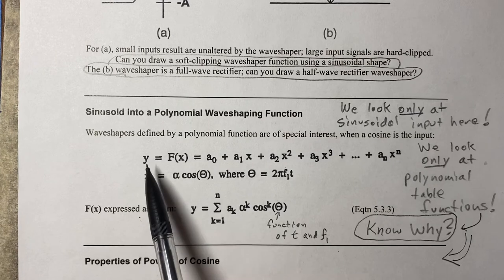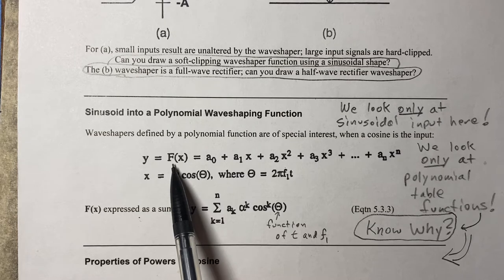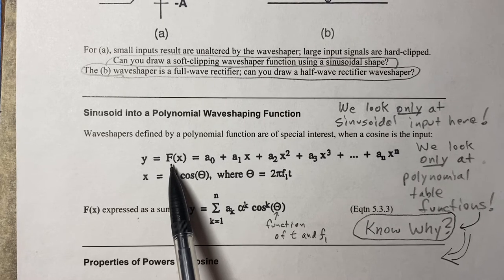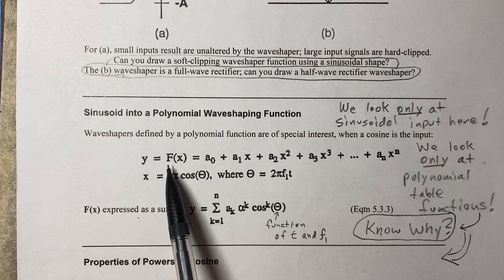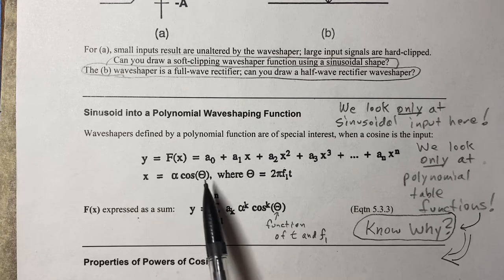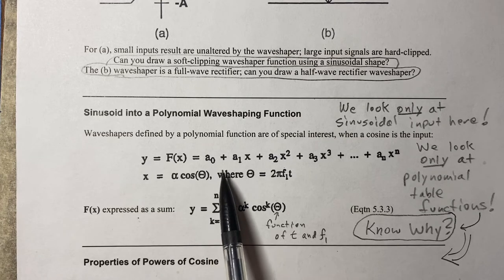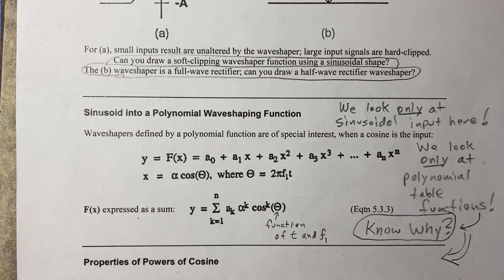Let's talk about the polynomial wave shaping function — we'll call it capital F of X, from the EC302 notes by Professor Beauchamp. You are only responsible for what I talk about here in class, not the entire chapter. If F of X is a polynomial, it's A-naught plus A₁X plus A₂X² all the way up to AₙXⁿ. That's straightforward — that's what a polynomial is.